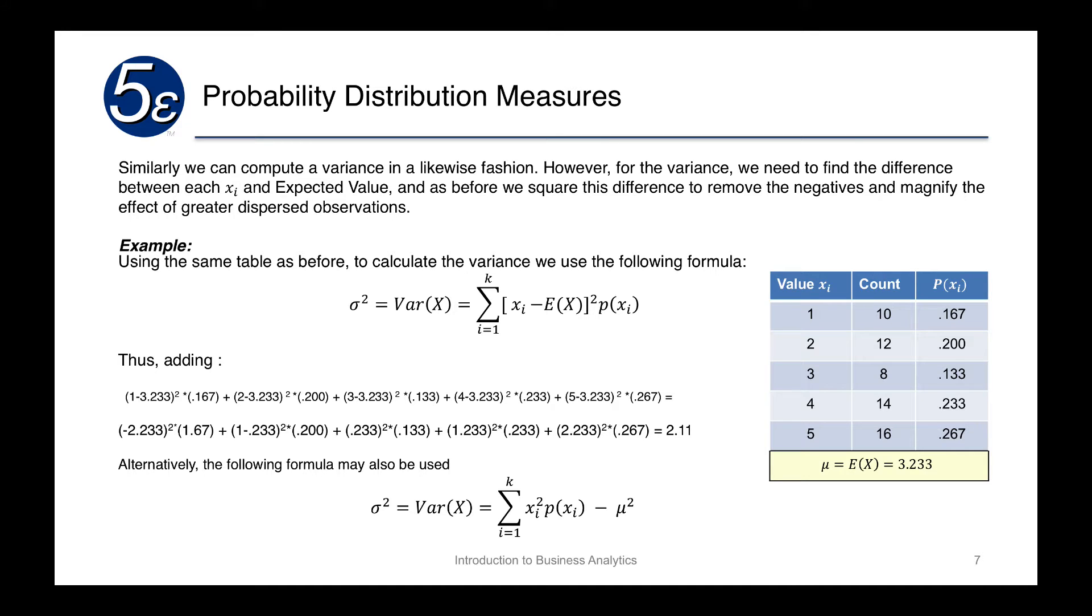Alternatively, there's another formula here where it's the same thing, it's just a little math factoring that's done. We have the sum of each xi squared multiplied by the probability of that xi, and then we subtract μ squared. We'll get the same answer, but it's a little bit more mathematical and actually a little bit more concise. However, again, we won't have to do this because Excel will actually do this for you.